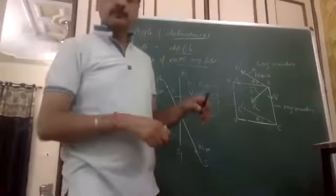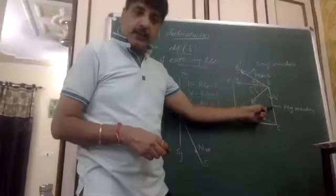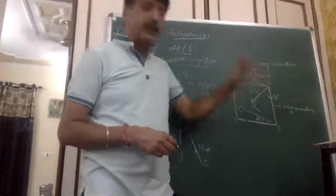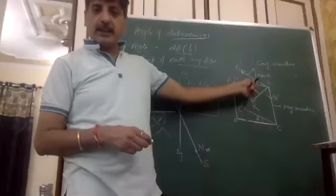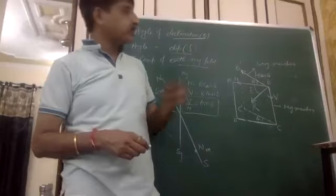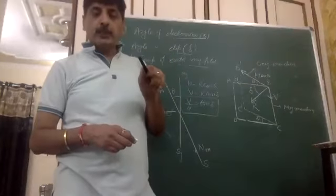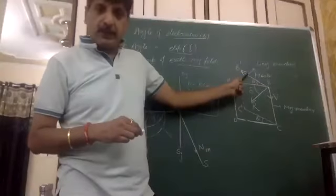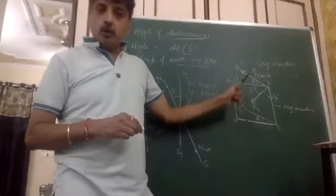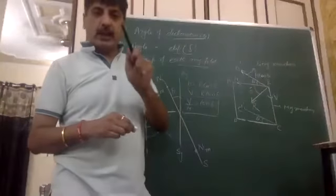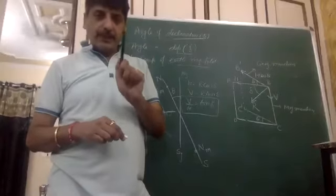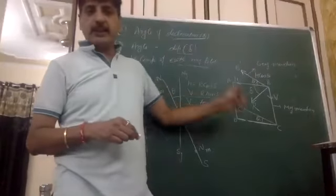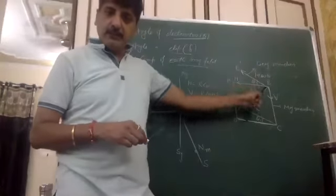If you see it, the component along this line gives H cos theta — the component along the new plane. The same vertical component V also appears in the new plane. This means the component of H along the new plane and V together determine the new angle of dip. The angle of dip in the new plane is defined such that tan of the new angle equals V divided by H cos theta. When the line AB makes this angle, we call it the angle of dip.